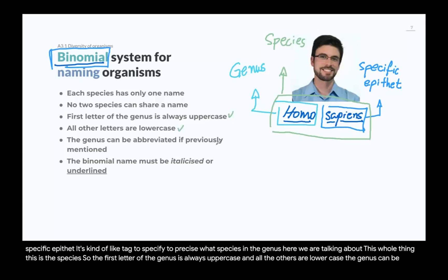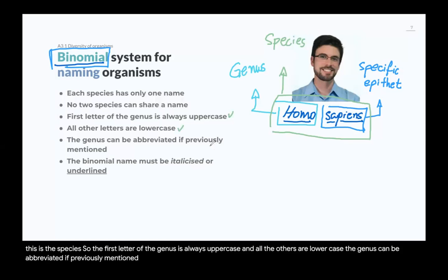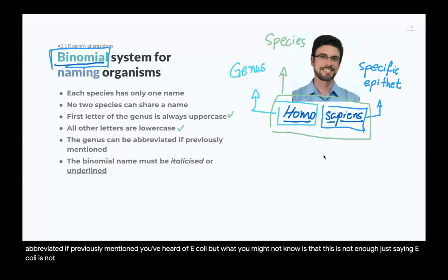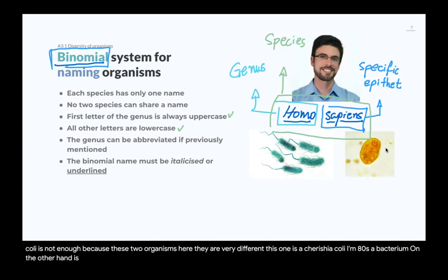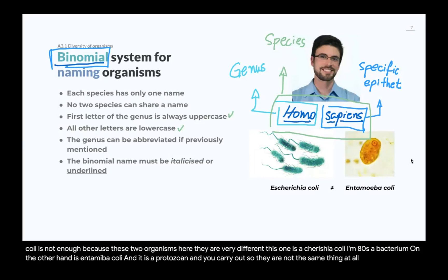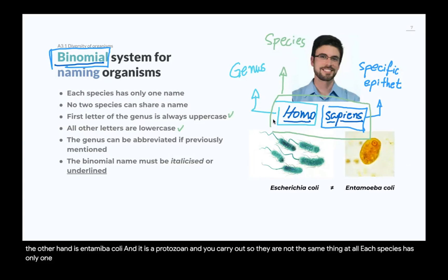The specific epithet is like a tag to specify what species within the genus we are talking about. The first letter of the genus is always uppercase, and all others are lowercase. The genus can be abbreviated if previously mentioned — you've heard of E. coli. But just saying E. coli is not enough, because these two organisms are very different. One is E. coli, a bacterium; the other is Entamoeba coli, a protozoan — a eukaryote. So they are not the same thing at all.